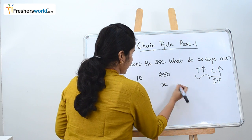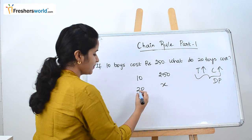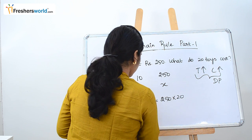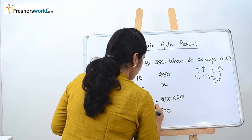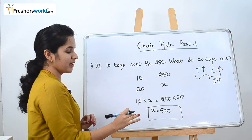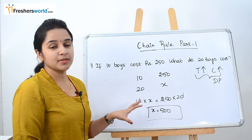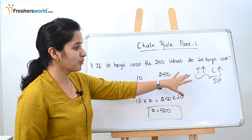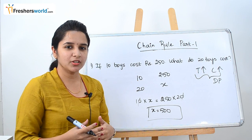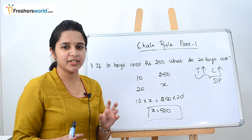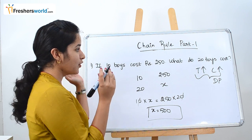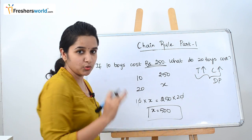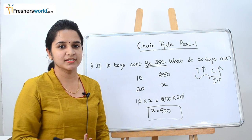Since more toys means more cost, this is direct proportion. We set up: 10 toys = 250 rupees, 20 toys = x. Cross multiplying: 10 × x = 250 × 20, so x = 500. The cost of 20 toys is 500 rupees. The concept here is direct proportion — the toys increased, so the cost is also more, definitely greater than 250.